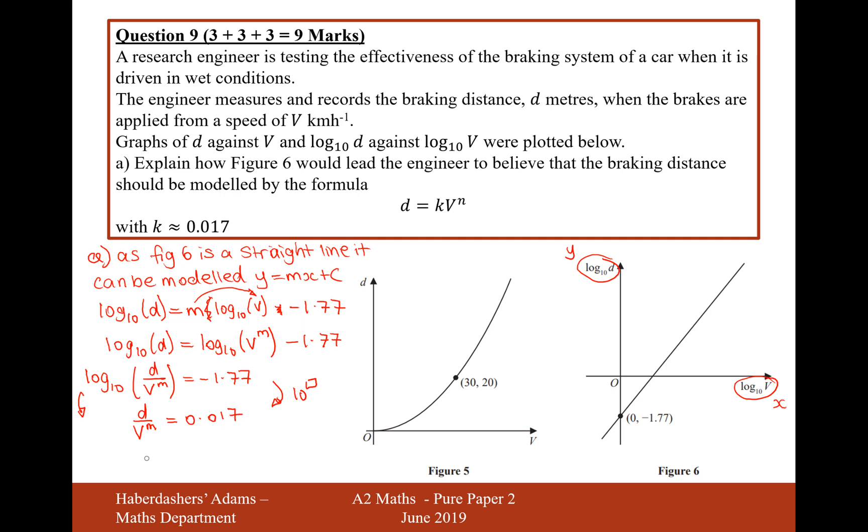Let's do 10 to the power of minus 1.77, and that should give you 0.017. And then we'll times the v to the power of m back onto the right-hand side. So it's going to be d equals 0.017 v to the power of m. But it's got n here, so we'll just scribble out all the m's that we've written and put n's there instead.